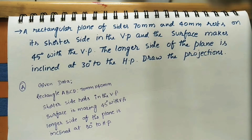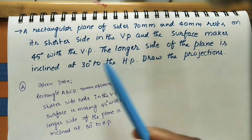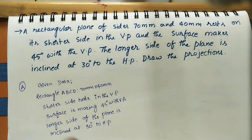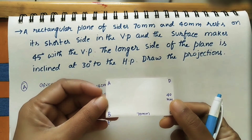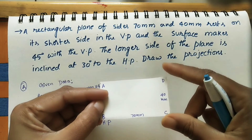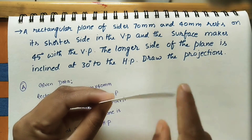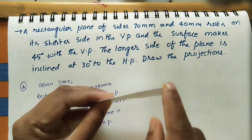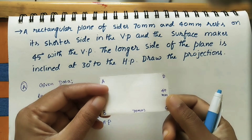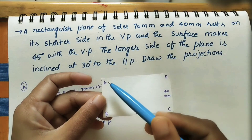Welcome to my channel. Let us discuss how to draw the projections of a given rectangular plane. We are calling it a plane because it has width and height but negligible thickness — it looks like a line in one view. That is why it has only two dimensions, and we call it a rectangular plane.